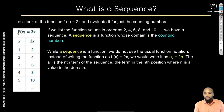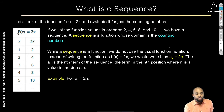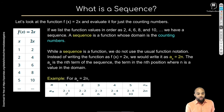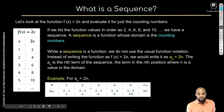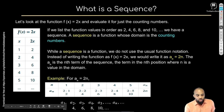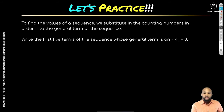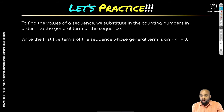To find the values of a sequence, we substitute the counting numbers. For a_sub_n = 4n − 3, we evaluate for n = 1, 2, 3, 4, 5. Plug each counting number in for n.